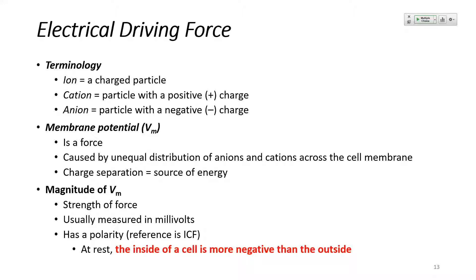When we speak about the membrane potential, we usually reference the inside of the cell — the intracellular environment. A good example is a resting cell, which has a membrane potential of negative 70 millivolts. That's another way of saying that at rest, a cell has more negative charge inside than it does outside. So when we speak about the membrane potential value, we're looking at the excess of charge on the inside of the cell.